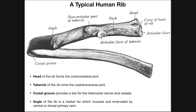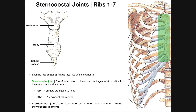Past the tubercle, we get to the angle of the rib, which is important because it provides a marker for which muscles are innervated by ventral or dorsal primary rami from the spinal cord. On the inferior aspect of the rib, there is a groove that runs along the length of the rib. This groove provides a site where intercostal nerves and blood vessels run along the rib in the intercostal spaces — the spaces between the ribs. The anterior attachment has hyaline cartilage called costal cartilage, which can attach on the sternum, or for ribs 8, 9, and 10, on other costal cartilages.